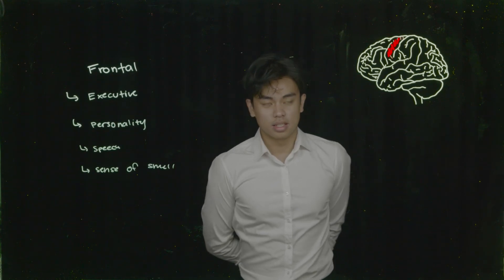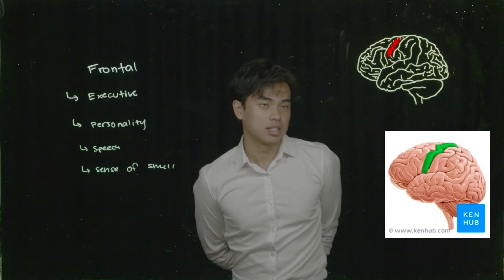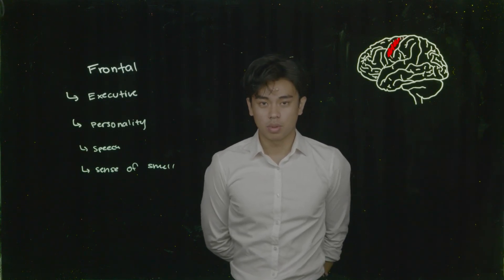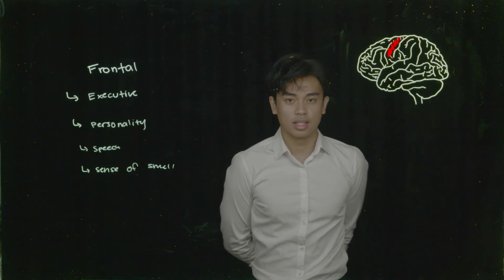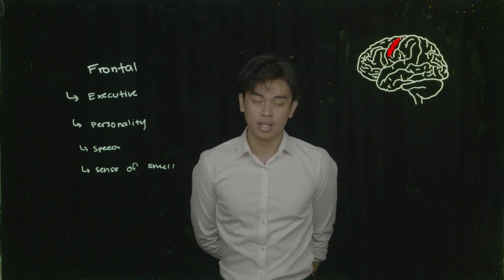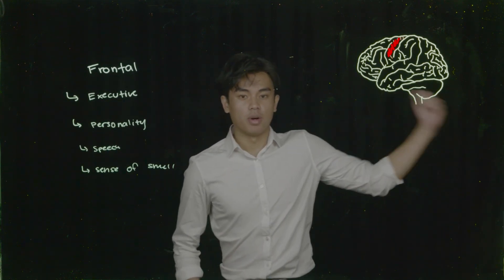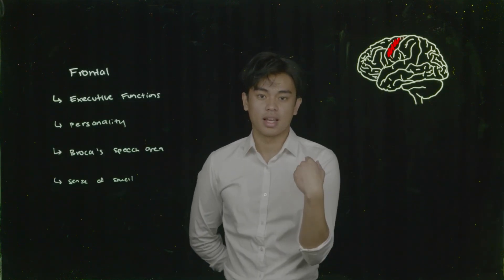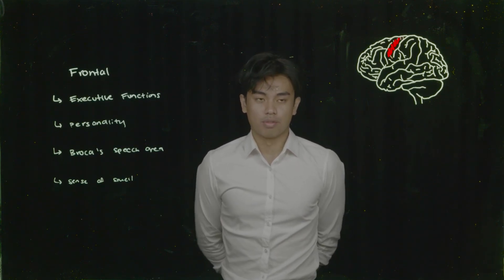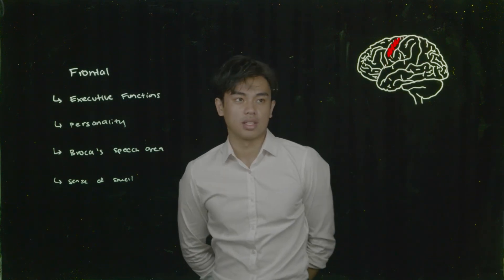What we'll be focusing on today is the gyrus marked in red here — the precentral gyrus. Our precentral gyrus, located in the frontal lobe, is responsible for somatic motor function, which is our voluntary movement. So if we were to elbow flex or extend, or flex and extend at the level of the carpals, that movement is derived from the fibers associated with that gyrus.